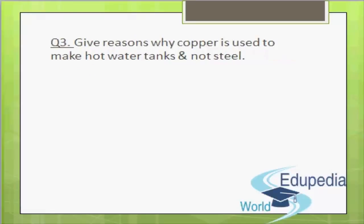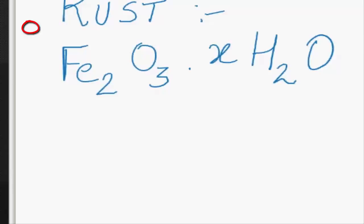Question number 3: Why is copper used to make hot water tanks and not steel? This is because copper does not react with cold or hot water, whereas iron reacts with steam to form iron oxide and hydrogen gas. Although iron does not react with hot water, it may react with atmospheric oxygen and dissolved oxygen in the presence of water to form rust, with chemical formula Fe₂O₃·xH₂O. Hence steel is not used to make hot water tanks.